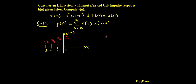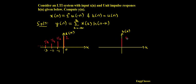Similarly, let me sketch h of k. This is u of k, which means the signal exists from 0 to plus infinity. It has amplitude 1 everywhere: at 0, 1, 2, and it continues forever till plus infinity.